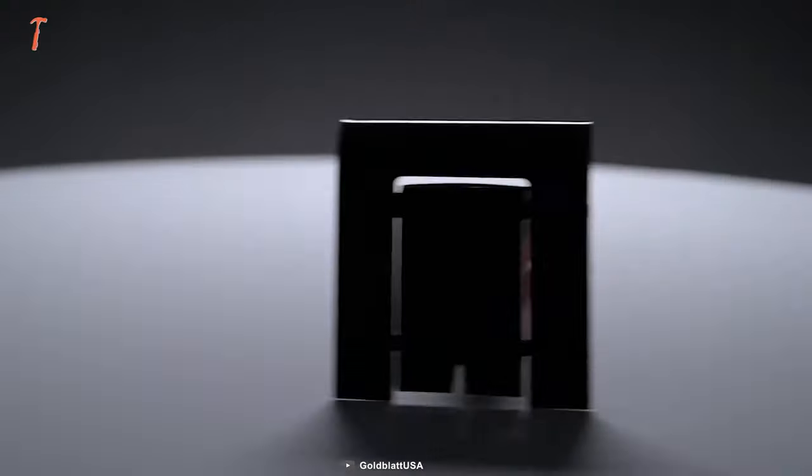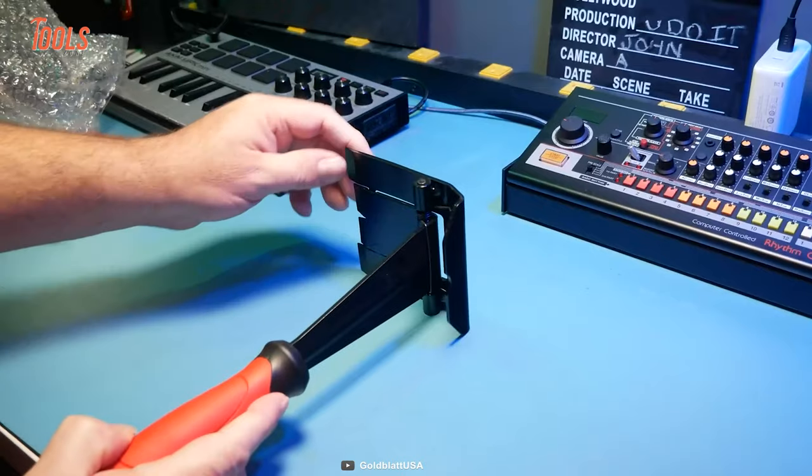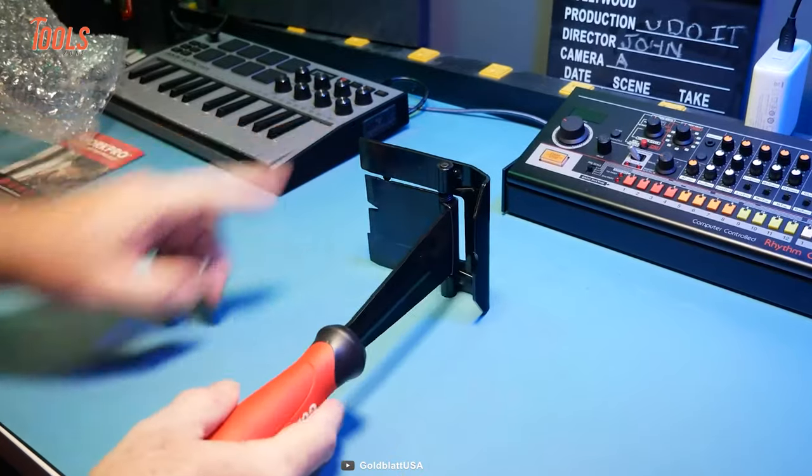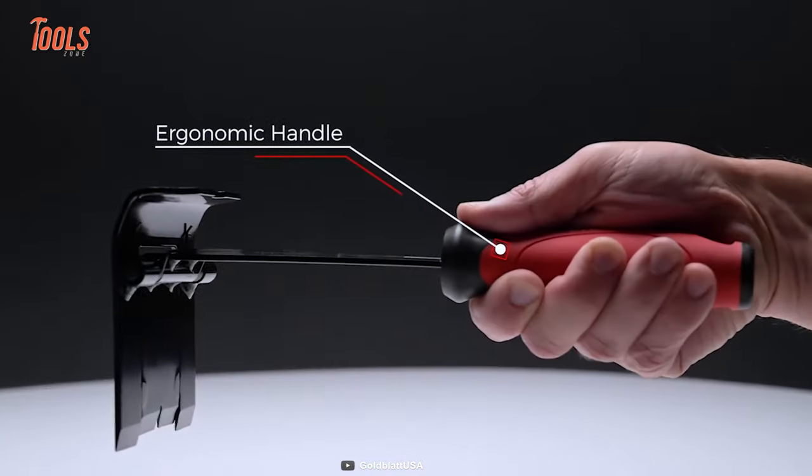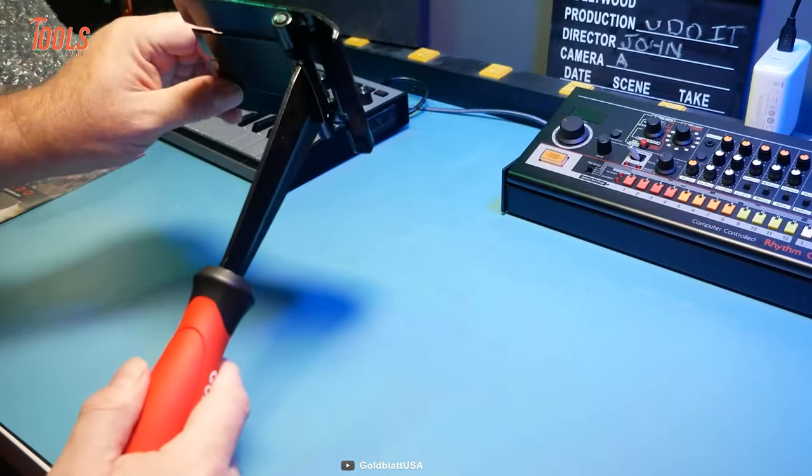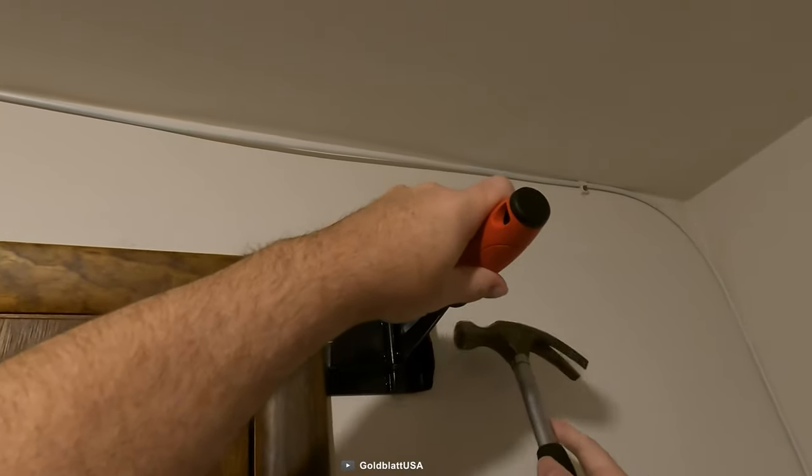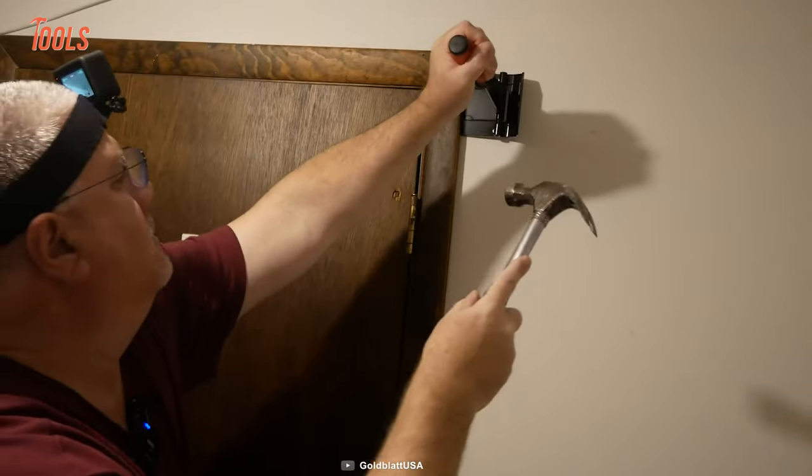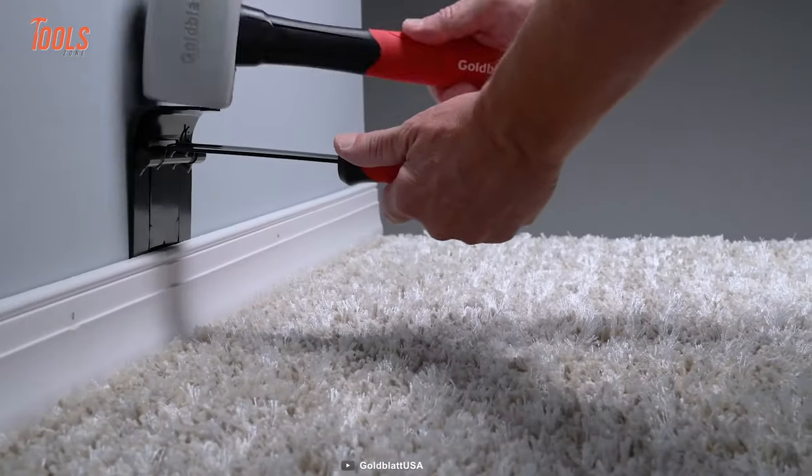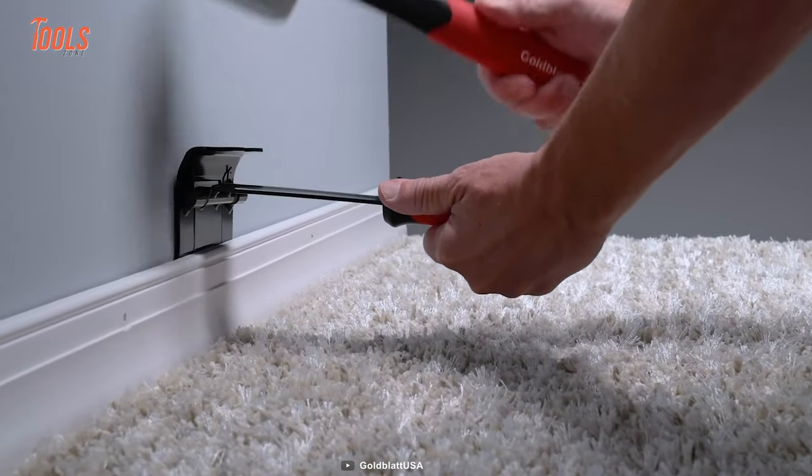However, the durable pry bar is constructed of quality material and built to last for years. On the other hand, the ergonomic rubber grip handle keeps you far and away from fatigue and strain. If you're dealing with multiple projects like commercial work, repair, and remodelings, Goldblatt's molding remover will be a great way to pull out trims.